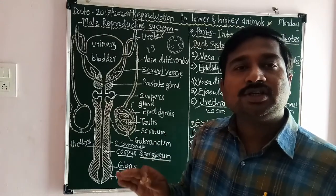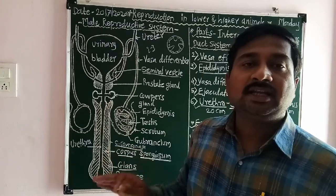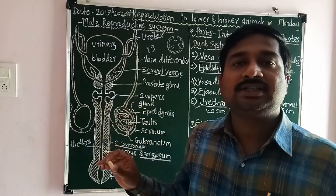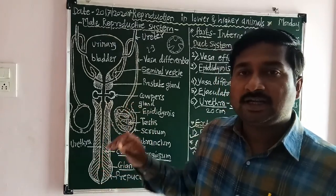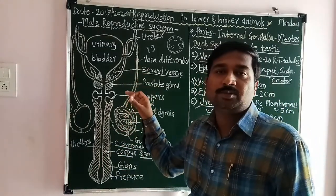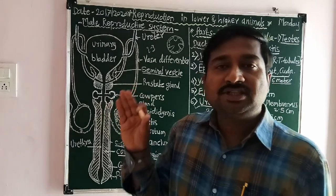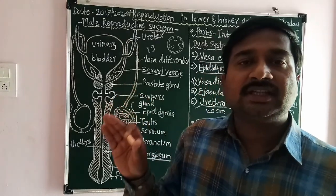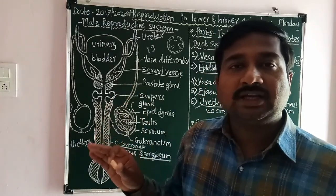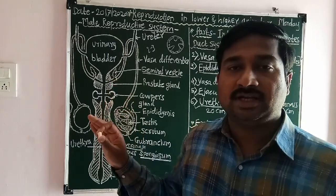If they are not lodged into the scrotal sac, then a disease is produced. That disease is called cryptorchidism, and due to that the male becomes sterile.